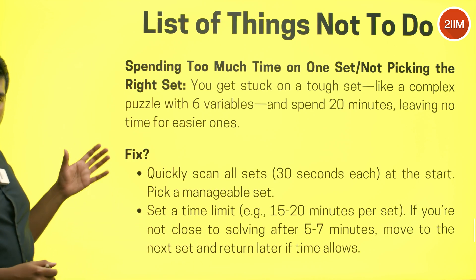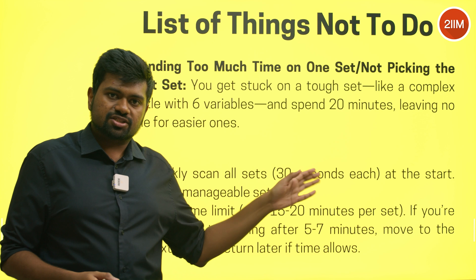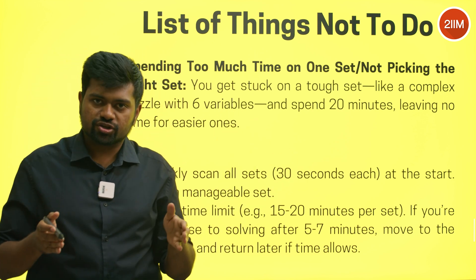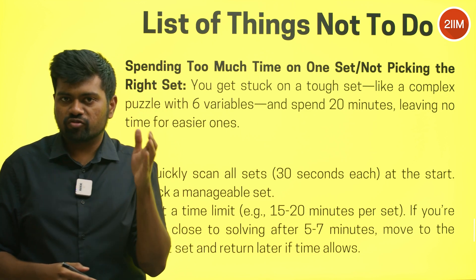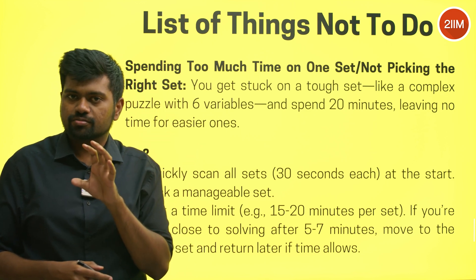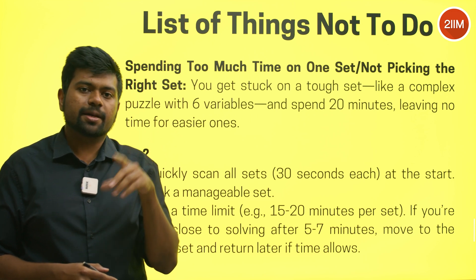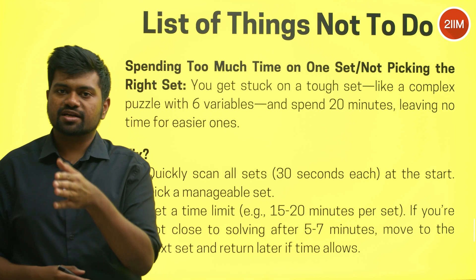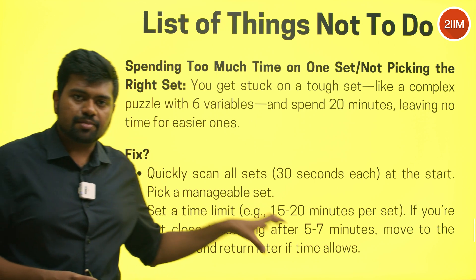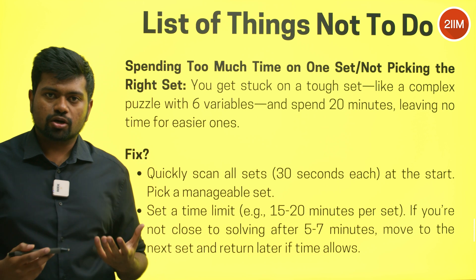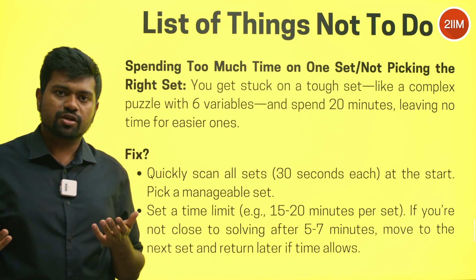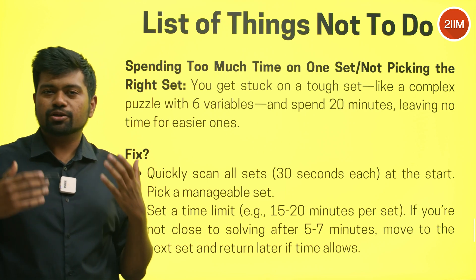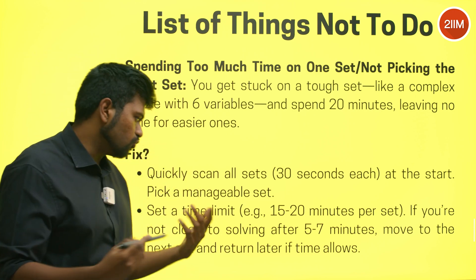The fix is to quickly scan all sets right at the start. Run through them one by one, identify which types are familiar, and attack those first. Set a time limit — if you've wasted five to seven minutes going nowhere, ditch it and move on.